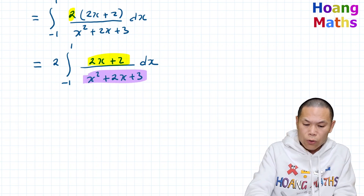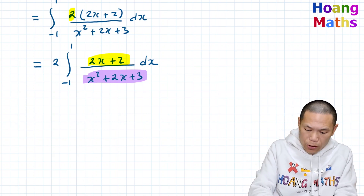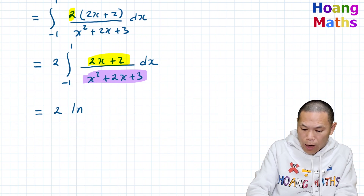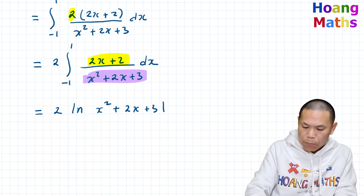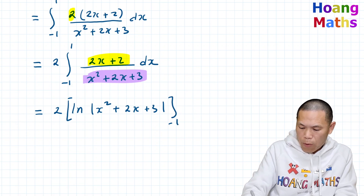So now we know that x squared plus 2x plus 3 is f(x) and 2x plus 2 is f'(x). Therefore integrating f'(x) over f(x) gives ln|f(x)|. So this gives 2 ln|x squared plus 2x plus 3|, evaluated from negative 1 to 1.